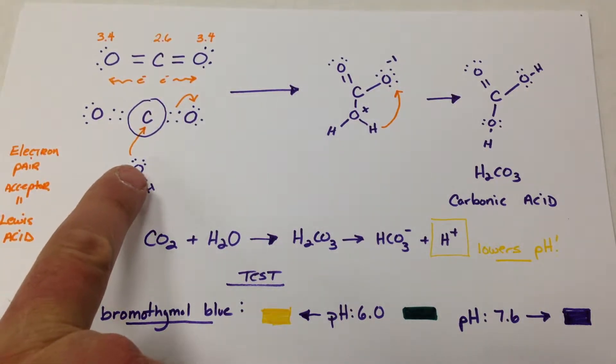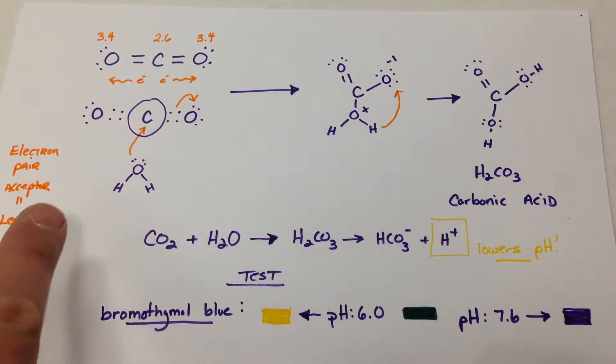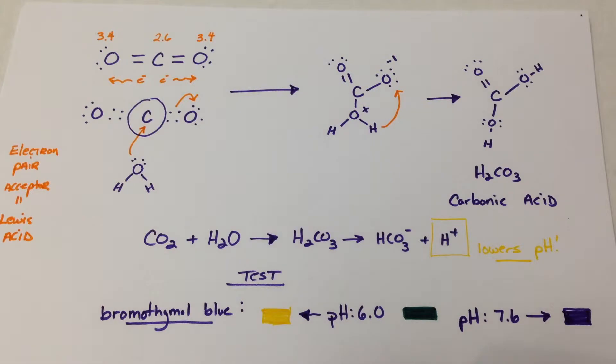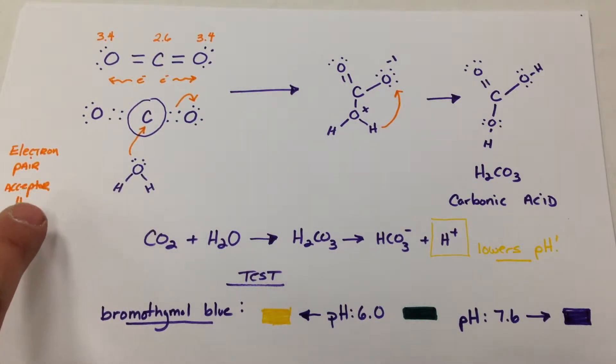And a lone pair from the water can easily be donated into the carbon, creating a bond. And we say that CO2 lowers the pH, is acting as an acid because it accepts a pair of electrons. It's an electron pair acceptor, which makes it a Lewis acid, as we've been talking about.